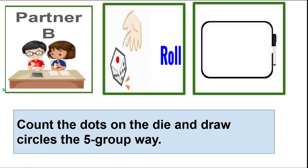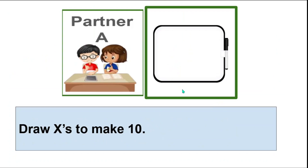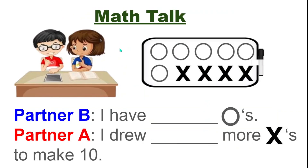Partner B, it's your turn to roll. Roll the die and draw that many circles on your dry erase board. Remember, your picture should be the five-group way. Partner B: I have blank circles. And partner A, here is your sentence stem: I drew blank more X's to make 10.